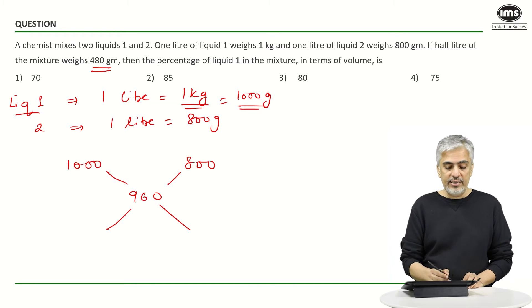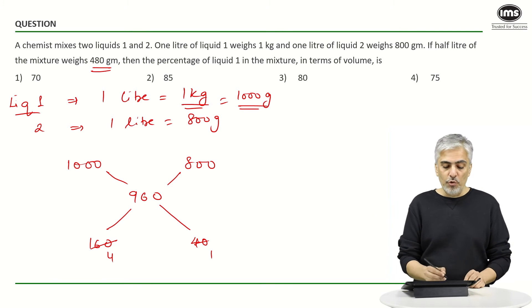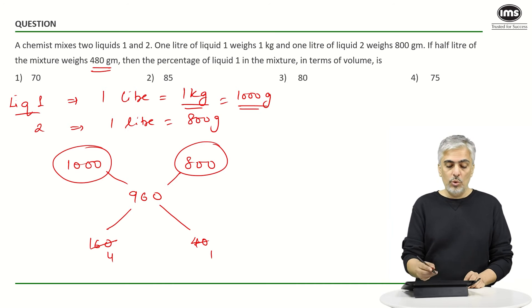960 minus 800 is 160, while 1000 minus 960 is 40, which means the ratio is 4 is to 1. That means I have taken four parts of liquid 1 and one part of liquid 2.